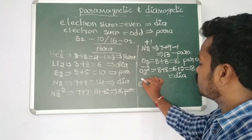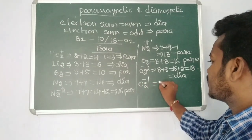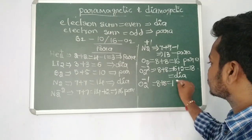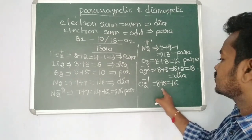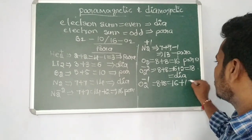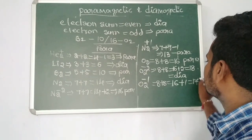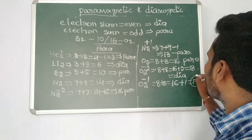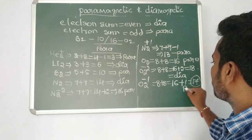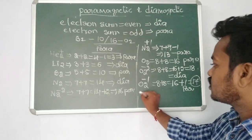Next, O₂⁻: 8 + 8 = 16, and it gains 1 electron, so 16 + 1 = 17 electrons. 17 is an odd number, so O₂⁻ is paramagnetic in nature.